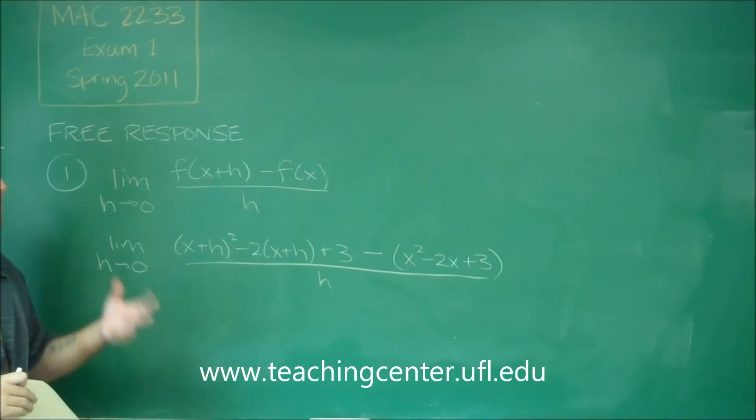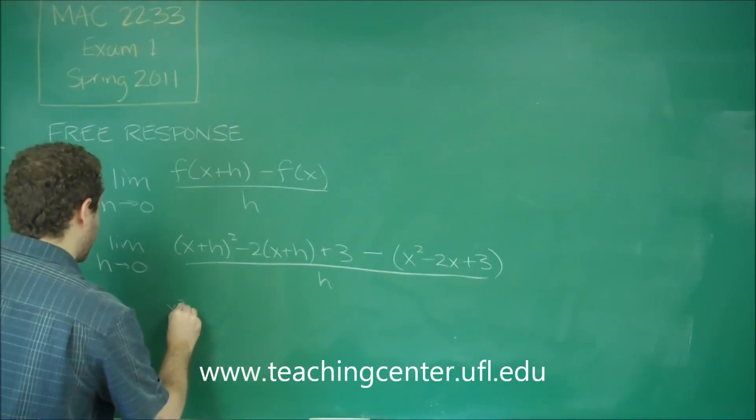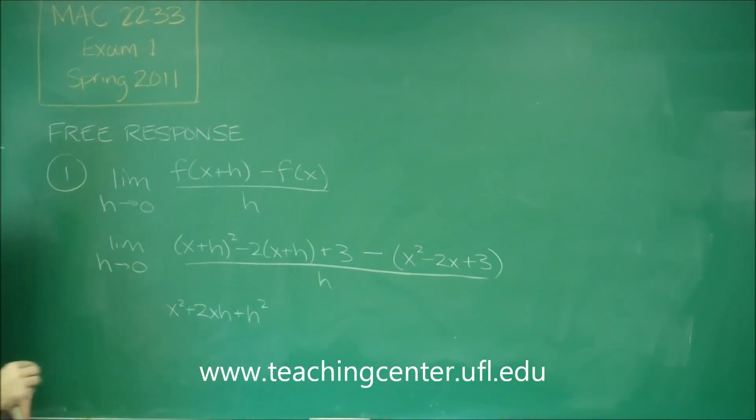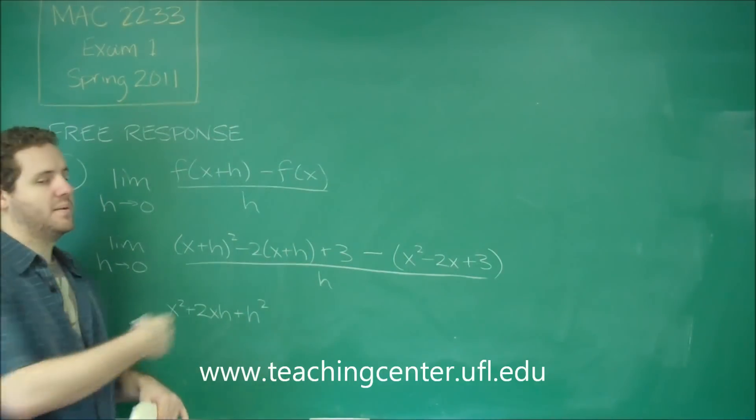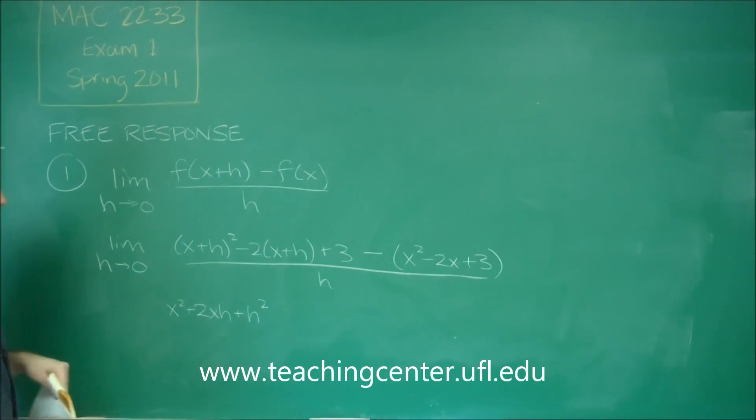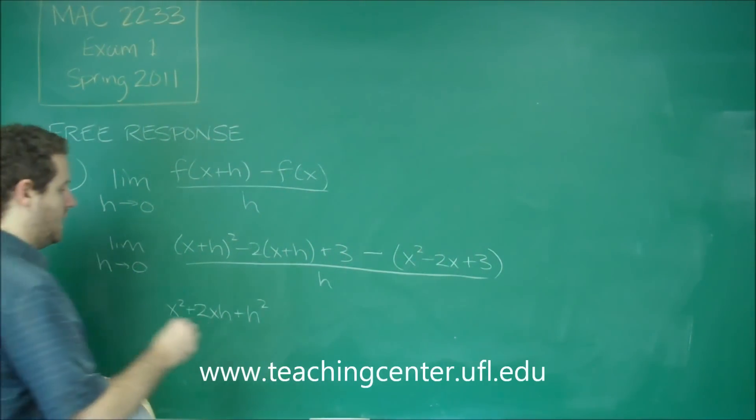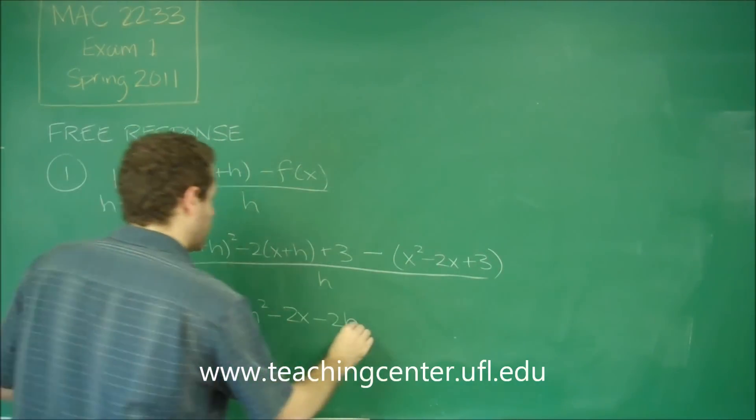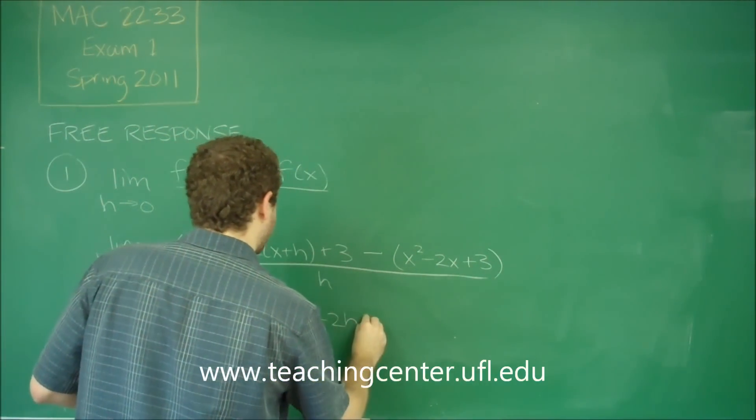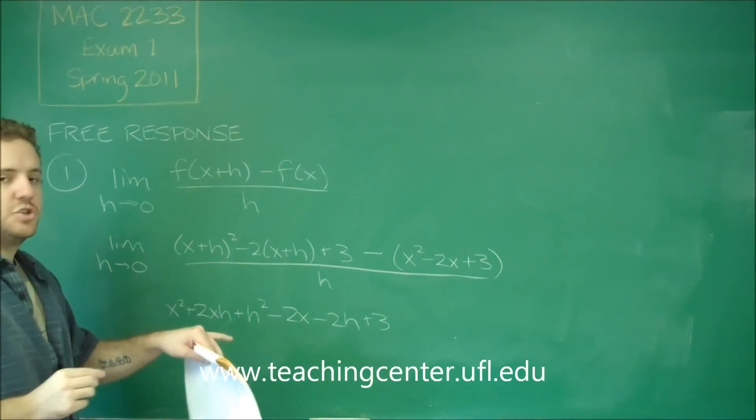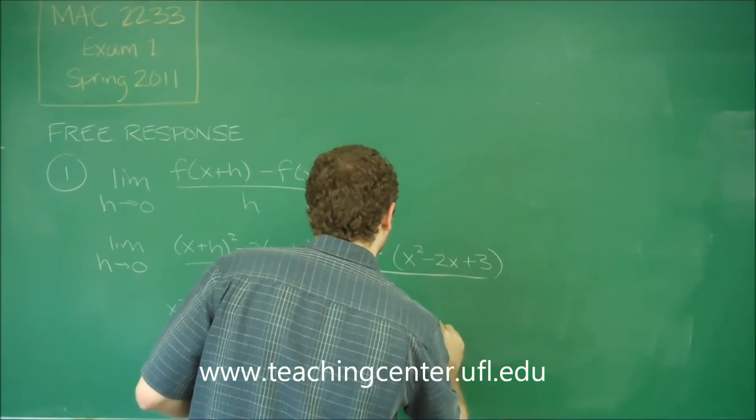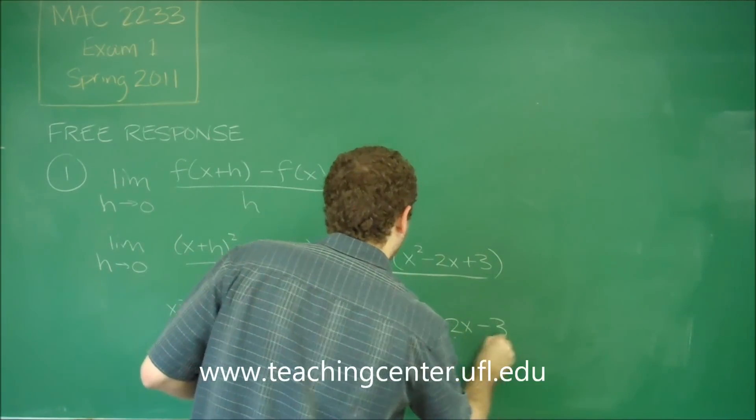So what we want to do now is simplify everything and try to combine all like terms. So x plus h squared is x squared plus 2xh plus h squared. That's if you FOIL that out. Remember this is a common form, the x plus y squared. You just have two times the middle term. Here we get minus 2x minus 2h and plus 3. And we can distribute the negative sign to all that stuff over there so that we get minus x squared plus 2x minus 3.